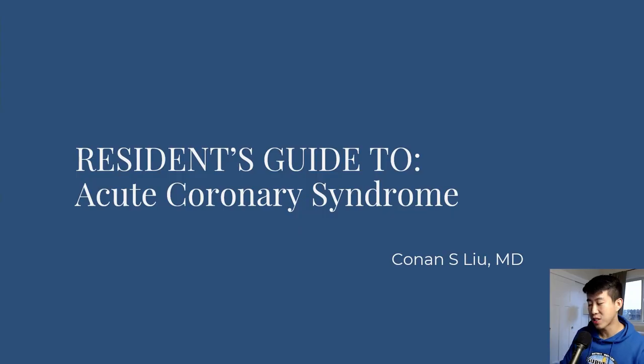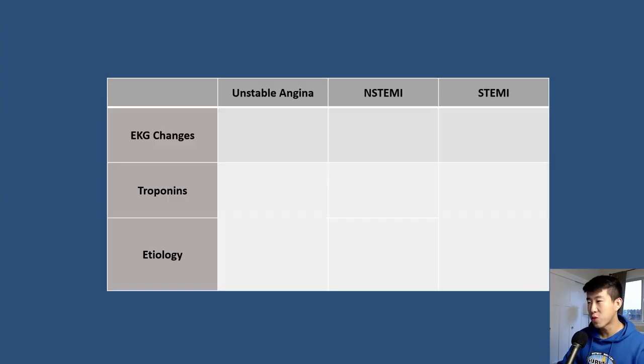Welcome to the Resonance Guide to Acute Coronary Syndrome. Let's start with the basics. There are three conditions that comprise acute coronary syndrome: unstable angina, NSTEMI, and STEMI.